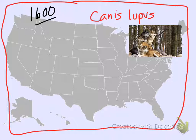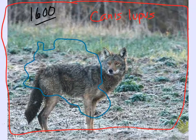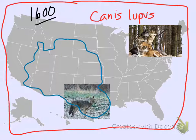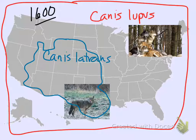Interestingly, in this time period we also have in basically this region another canid species — dog-looking, dog-acting species. We have Canis latrans. They are a western species. They don't live here in 1600. There are no coyotes in Ohio, Pennsylvania, Illinois, West Virginia. That's not coyote territory. It is, however, wolf territory — everything's wolf territory.